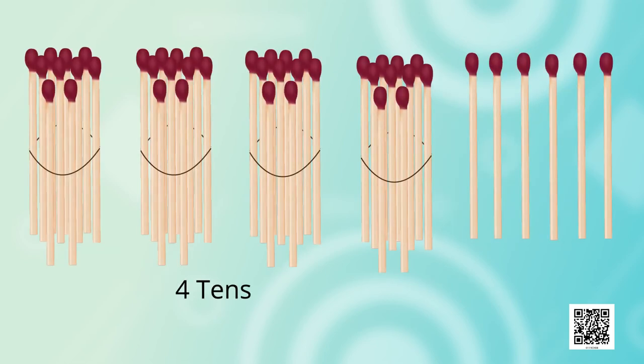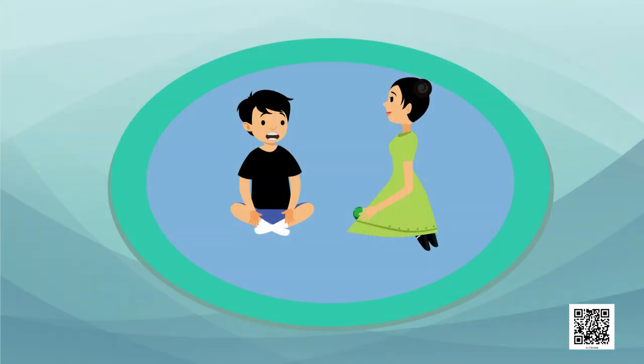3 tens again. And this time, 1, 2, 3, 4, 5, 6, 7, 8, 9. 9 ones. 39. 4 tens and 1, 2, 3, 4, 5, 6. 6 ones. That is 46. So, now, show me what you have done. And here is your big green marble.